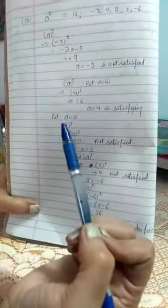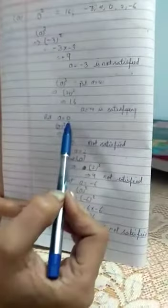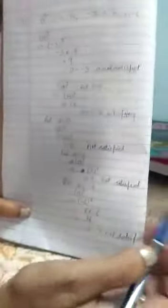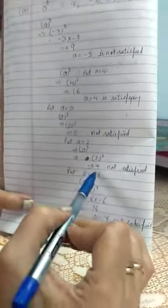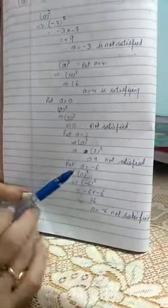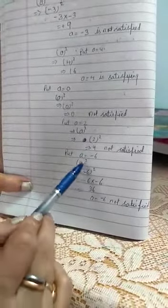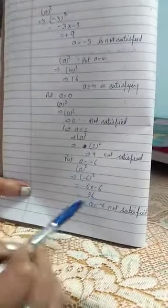First put zero: zero always becomes zero in multiplication, not satisfied. Then a equals 2: 2 square equals 4, not satisfied. Last value, a equals minus 6: minus 6 into minus 6 equals 36, not satisfied.